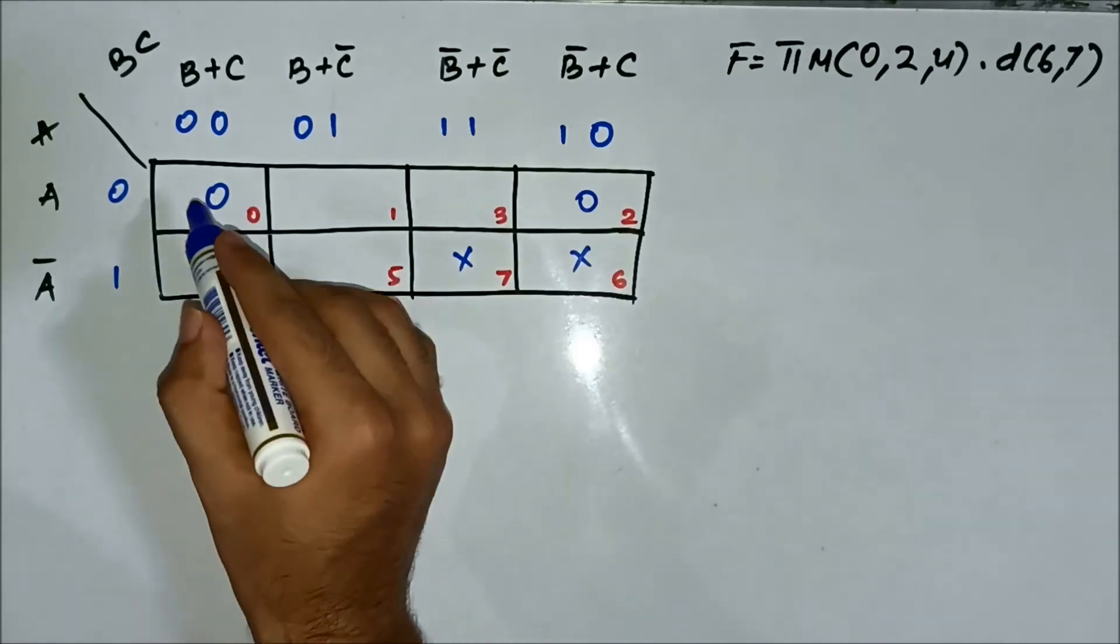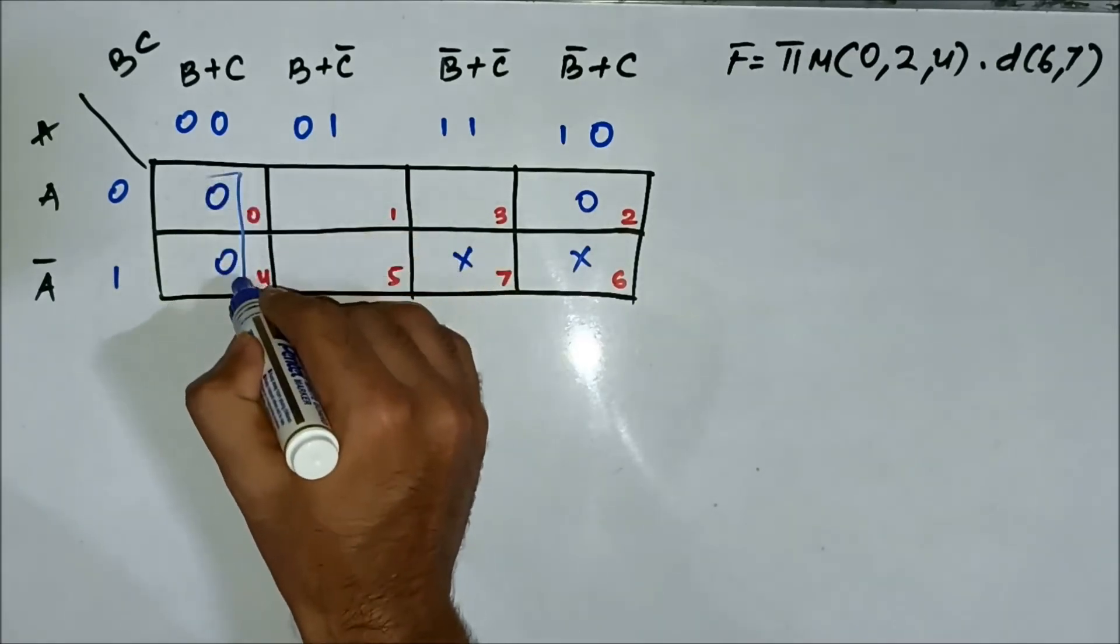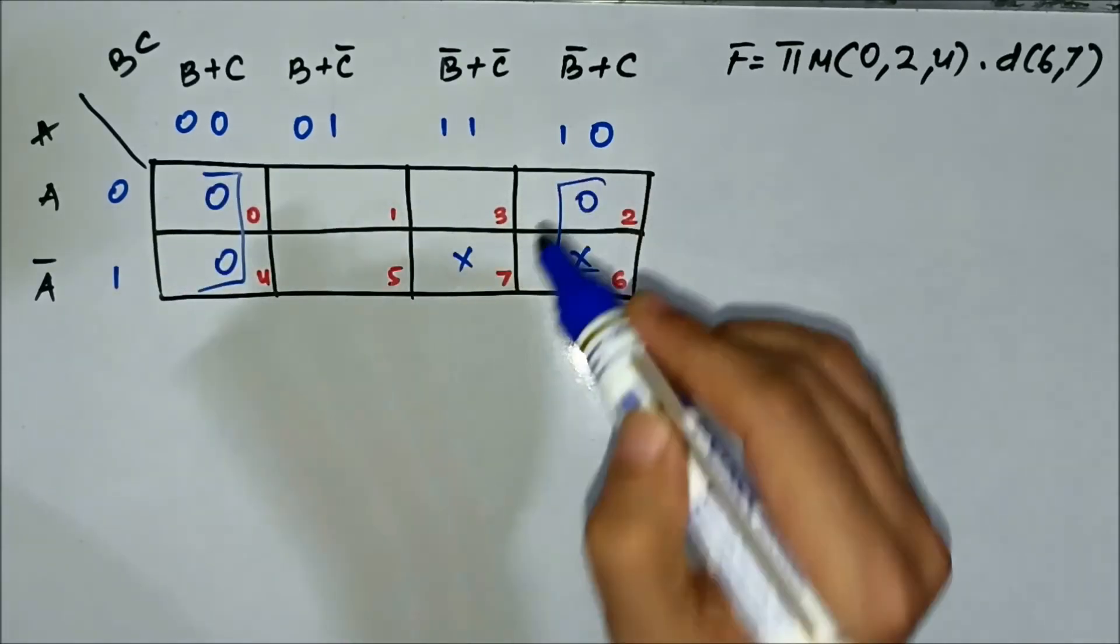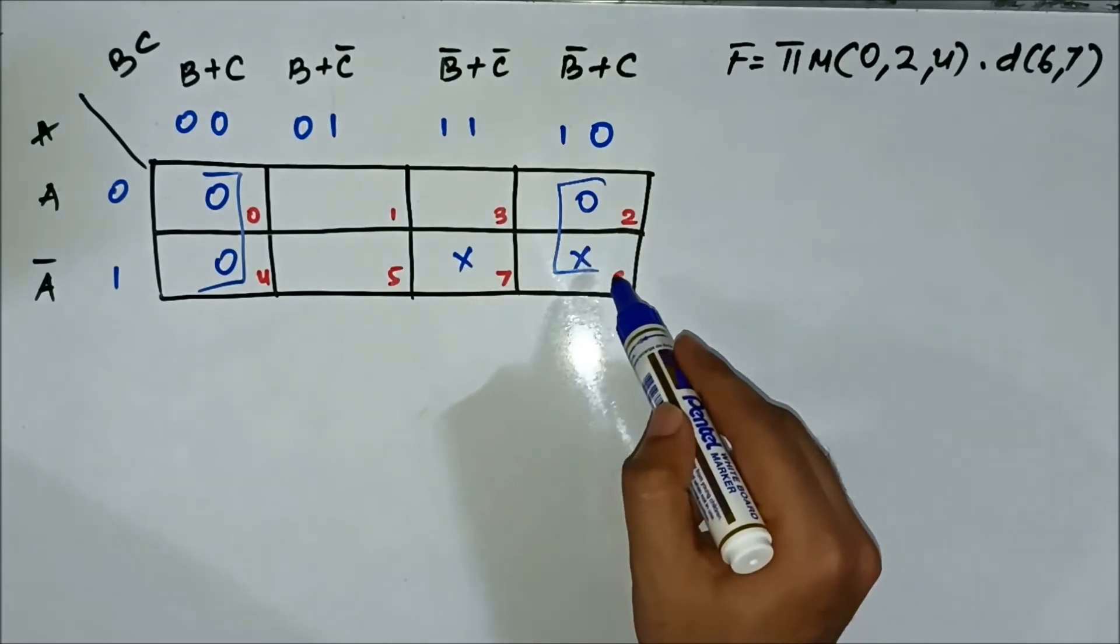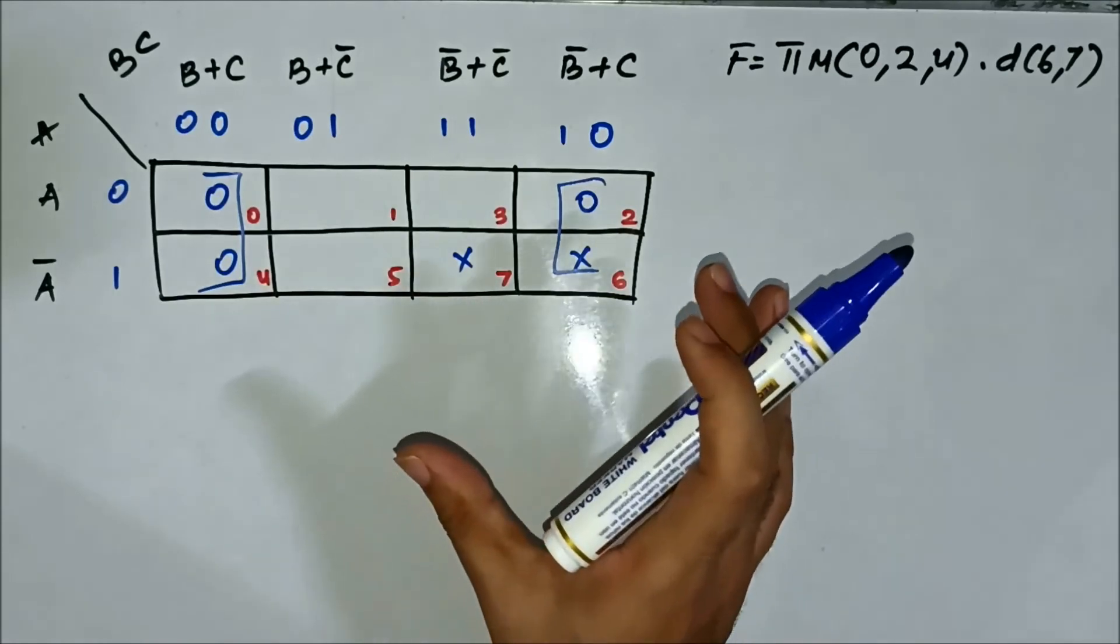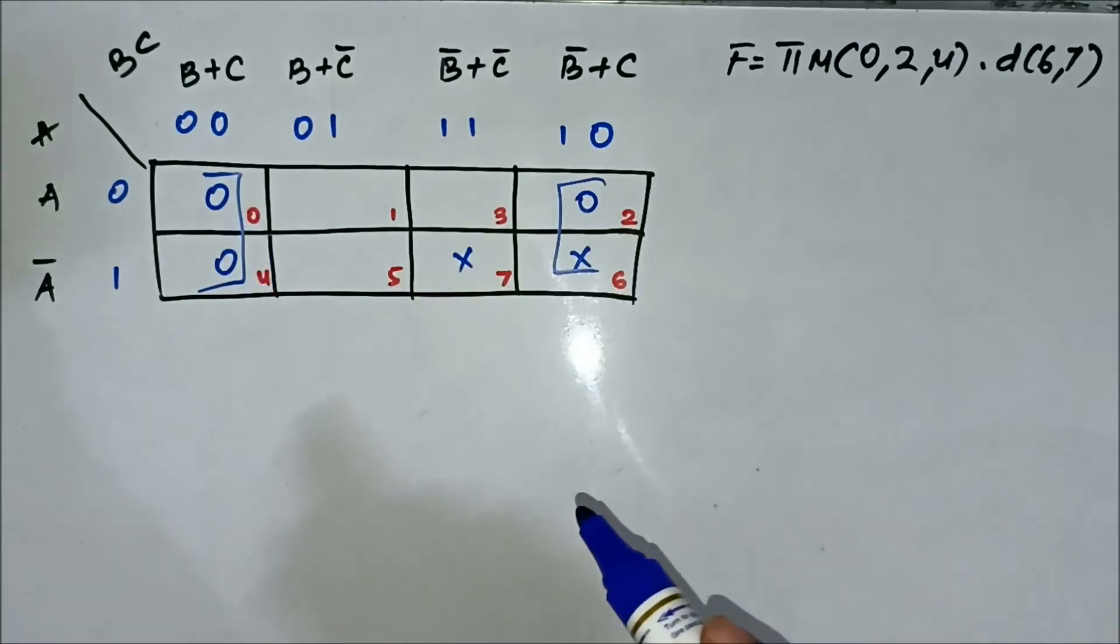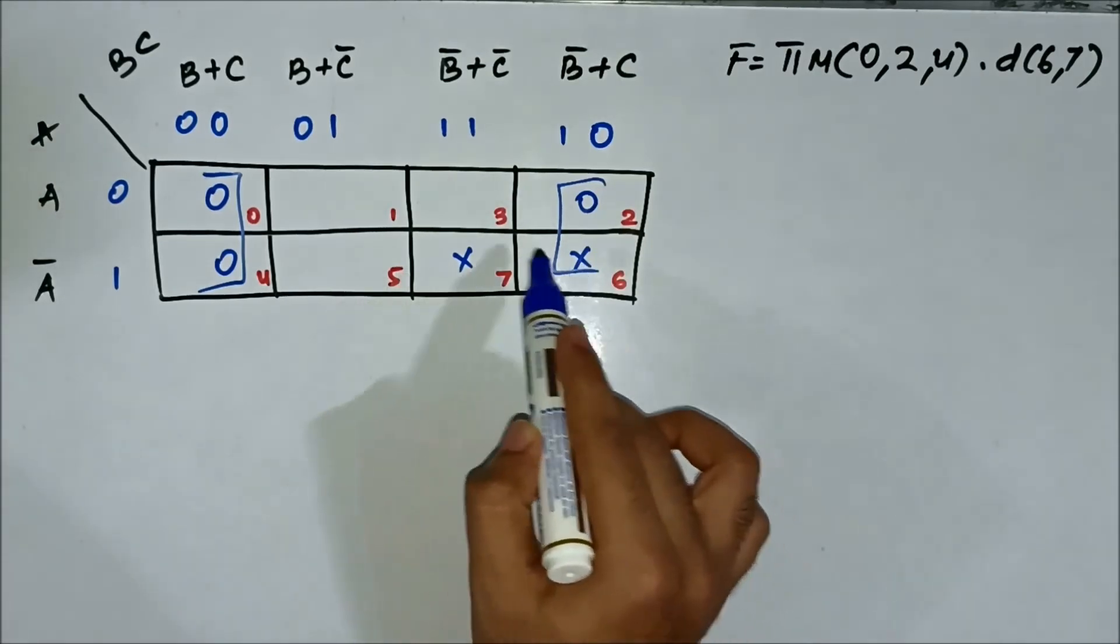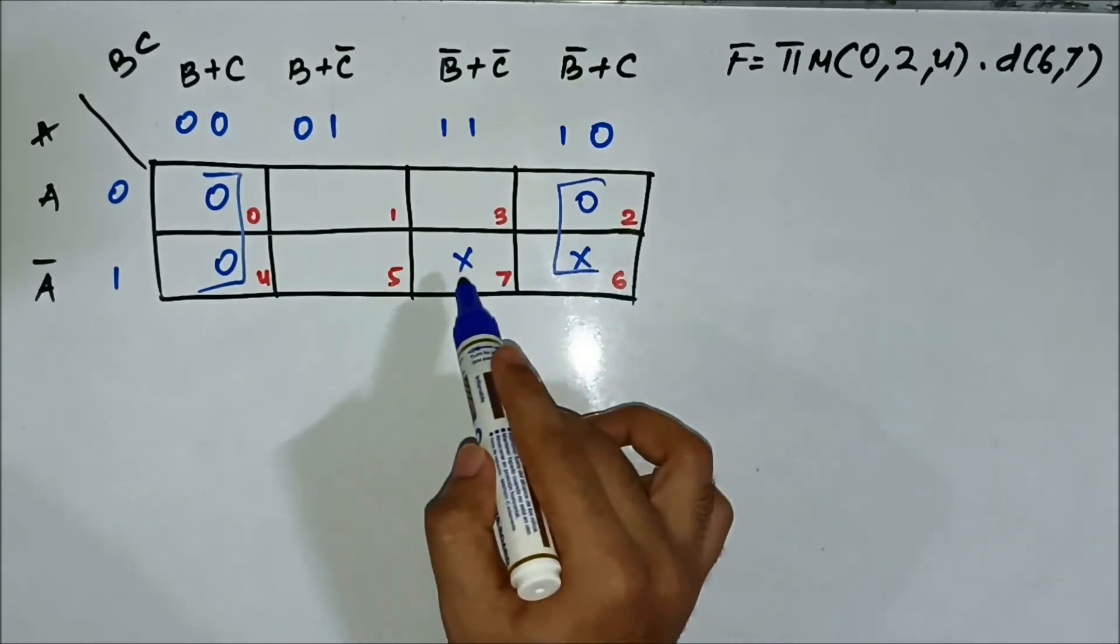Here we will form a quad involving cells 0, 4, 2, and 6. This x-marked cell, cell number 6, assists in the formation of a quad along with the 0-marked cells 0, 4 and 2. But here we will not form a pair involving the cells 6 and 7.